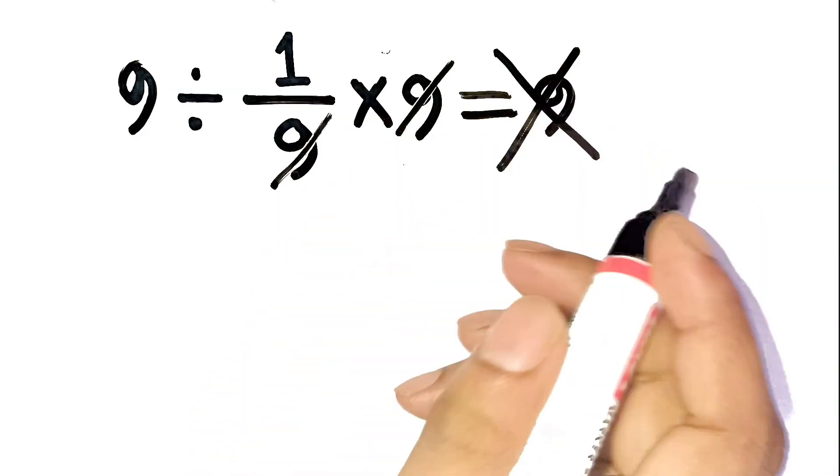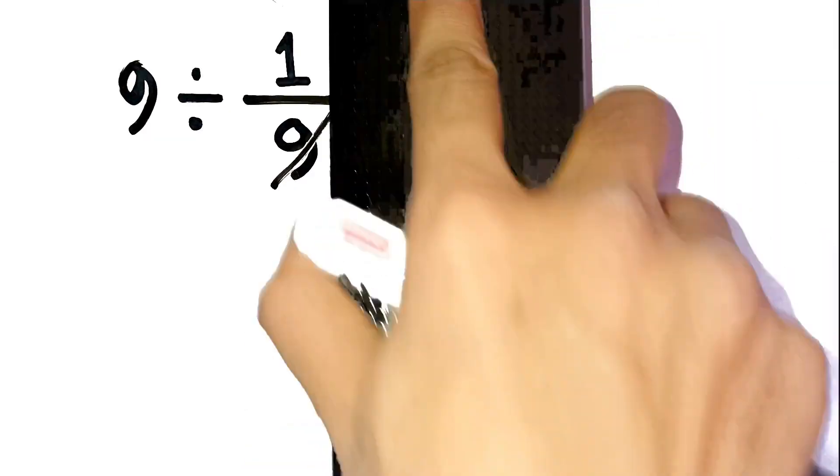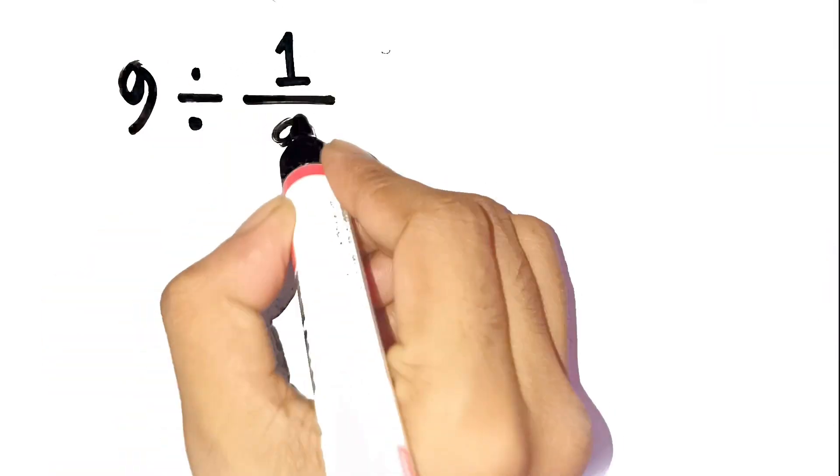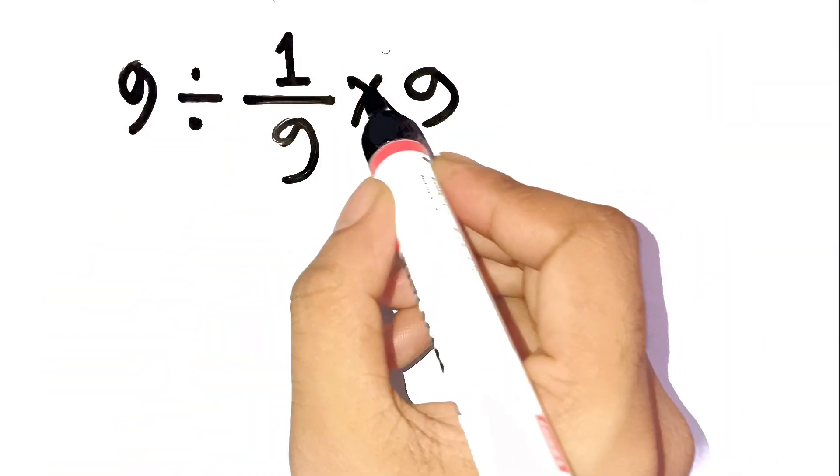But that's exactly where almost everyone trips up. Let's break it down slowly. The expression is 9 divided by 1 ninth times 9.